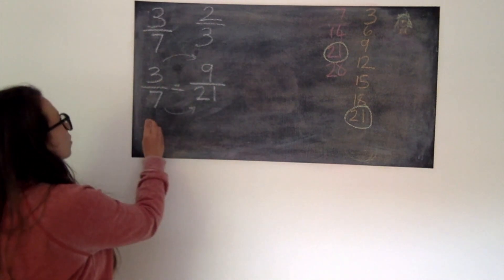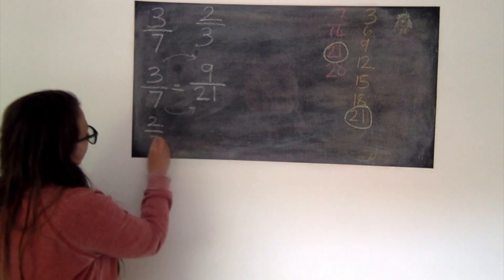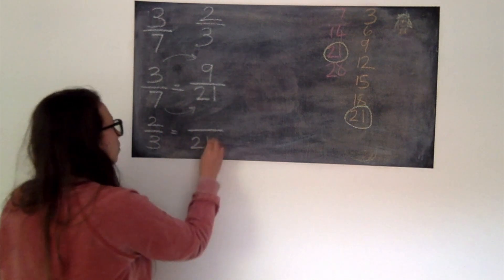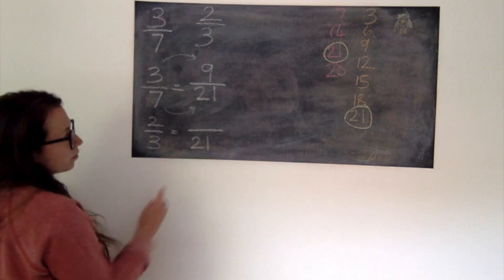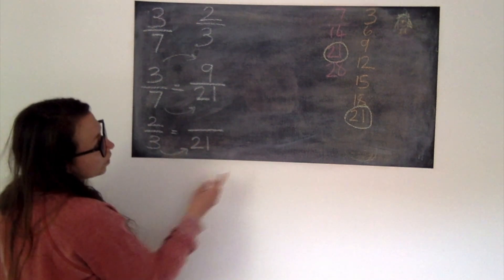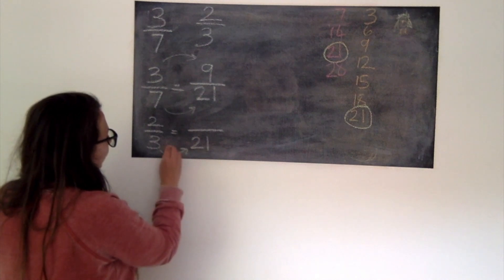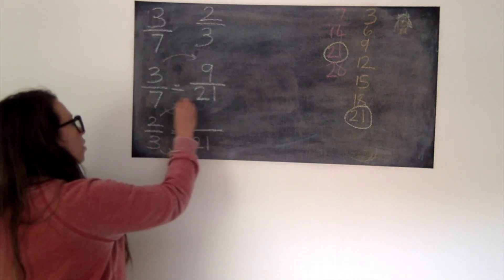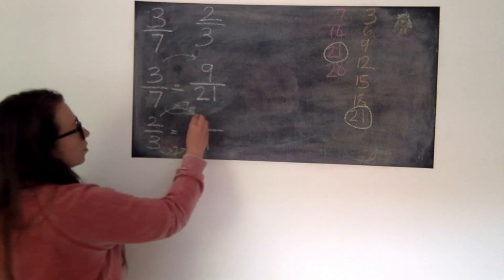My next one is 2/3rds. So 2/3rds is the same as how many 21sts? Remember the denominators have got to be the same. So 3 times by what gives me 21? I'm using my times tables. It's times by 7. Same to our numerator. Times by 7, times by 2 is 14.